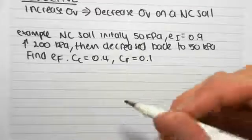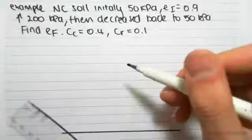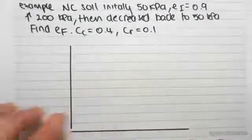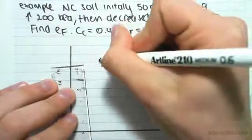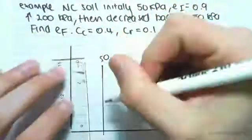Let's draw what's going on as we always do. We are initially at 50 kPa, so let's make this 50. 50 kPa, 50 down here and our voids ratio is 0.9.